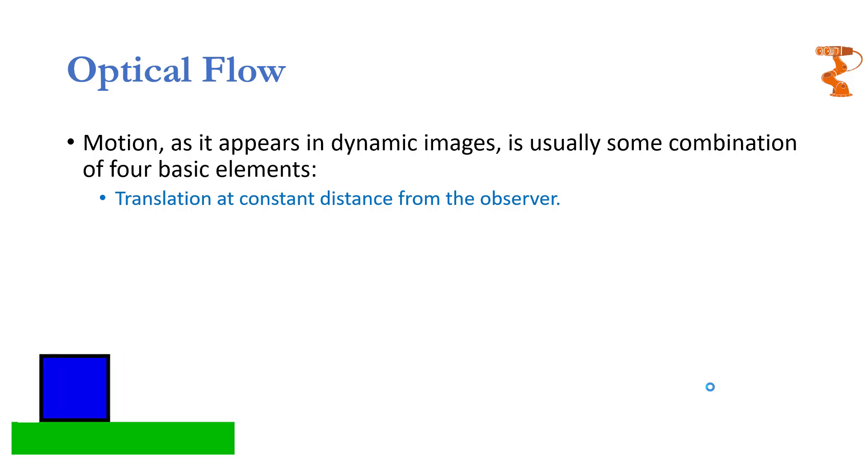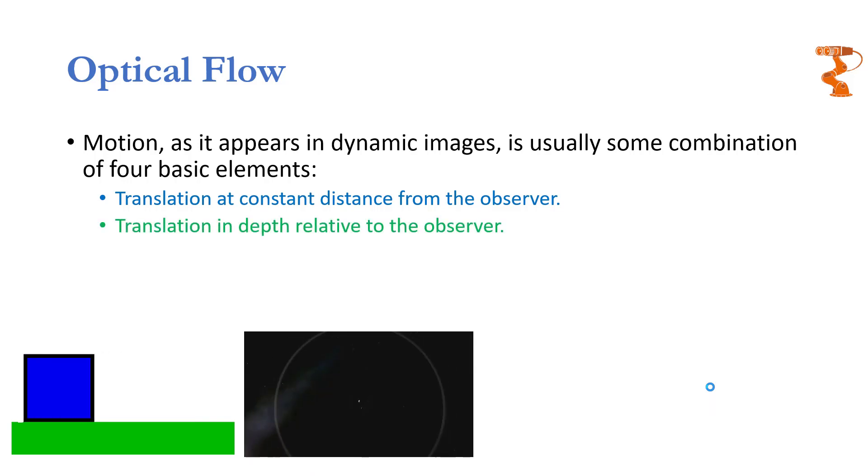For example, this box sliding on the screen. It is translating at a constant distance from you. The second type of motion is when the object moves towards or away from the observer. That is when you are zooming in or out of any object.